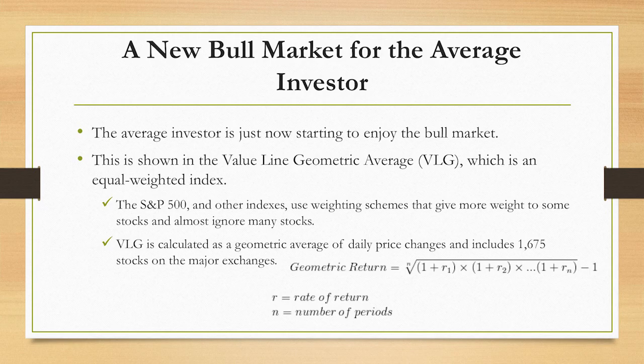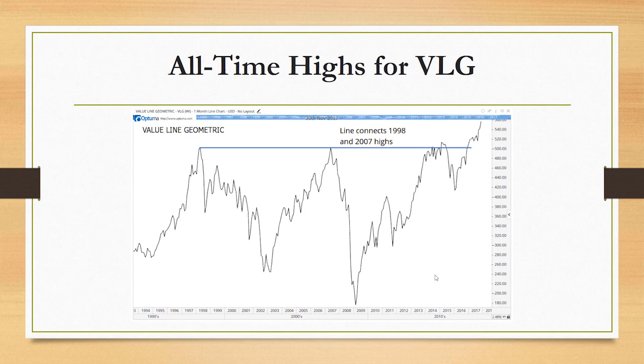This includes a larger number of stocks than most other indexes, and the geometric average equally weights each stock. So you end up with a large-cap company having just as much weight as a company with a market cap that's only 0.1% as large. It gives you a more comprehensive look at what the median stock is doing — in other words, what is going on in the average world.